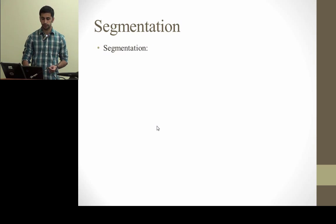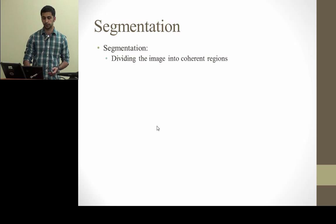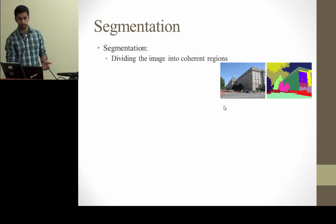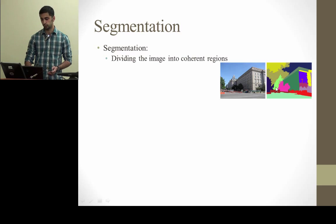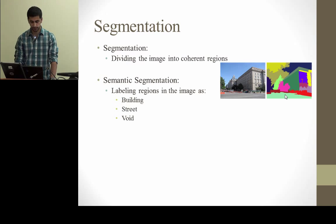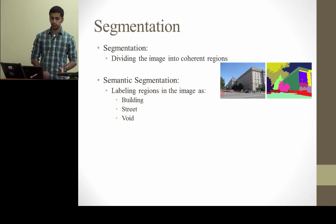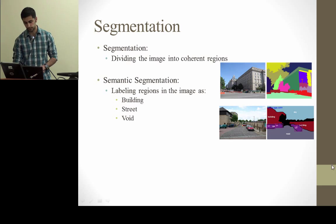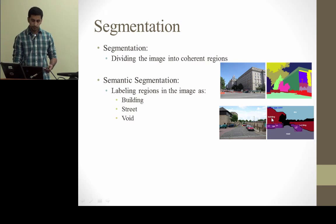Generally, image segmentation or superpixel segmentation is dividing the image into coherent regions. Here we see an image and on the right side we see the segmentation results. Semantic segmentation is the same thing but with the difference that each of the regions should be semantically meaningful. You can see this is the image and here we have semantically meaningful regions — buildings, sky, road, cars, etc.